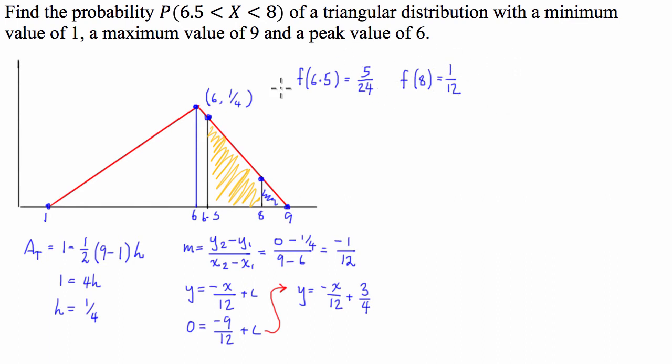So what we can then do is we're going to say the area of the shaded region is equal to the area of the big triangle, subtract the area of the small triangle, which is equal to the area of the big triangle is going to be a half base times height.